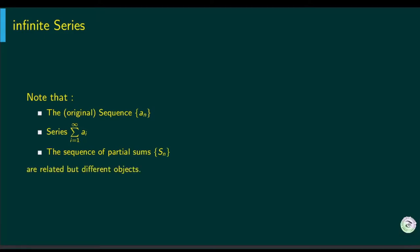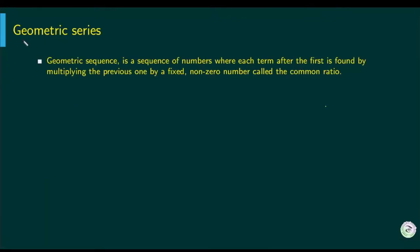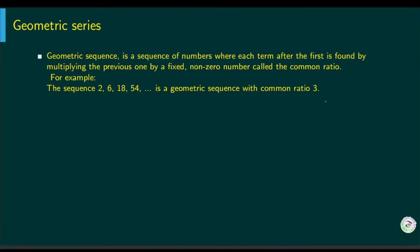One important series is the geometric series. A geometric sequence is a sequence where each term after the first is found by multiplying the previous term by a fixed non-zero number called the common ratio. For example, 2, 6, 18, 54 — multiplying each term by 3 gives the next term, so the common ratio is 3.